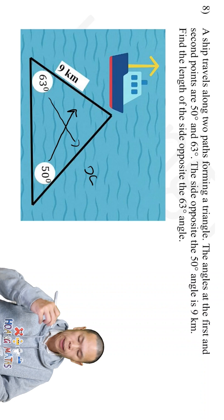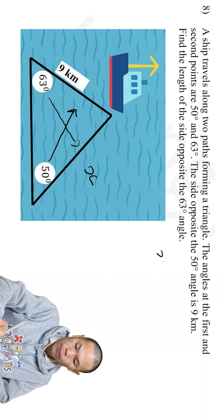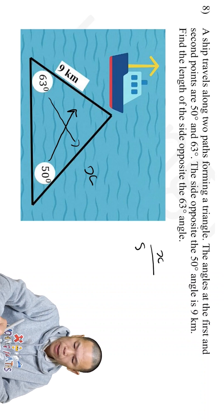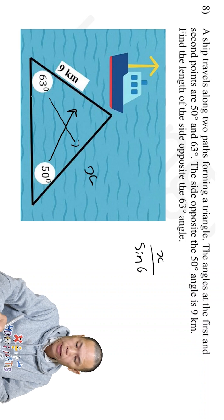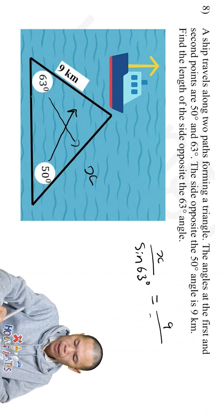By using sine rule, we know that X over sine 63 degrees equals 9 over sine 50 degrees.